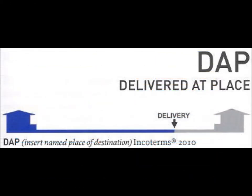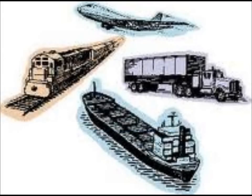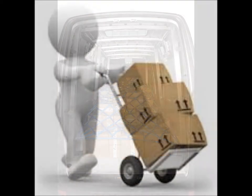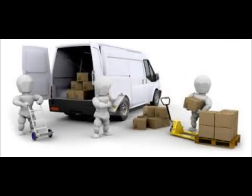Now, we are going to talk about Delivered at Place, which is a rule that may be used with multimodal transport. Delivered at Place means that the seller delivers when the goods are placed at the disposal of the buyer, on the arriving means of transport and ready to unload at the named place of destination. This place can be the buyer's premises or a nearby place.